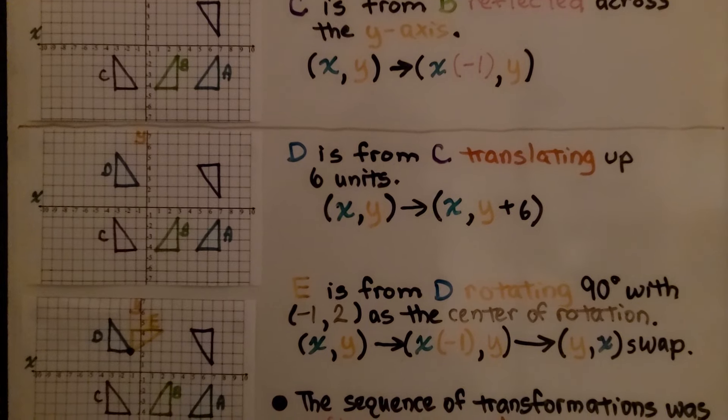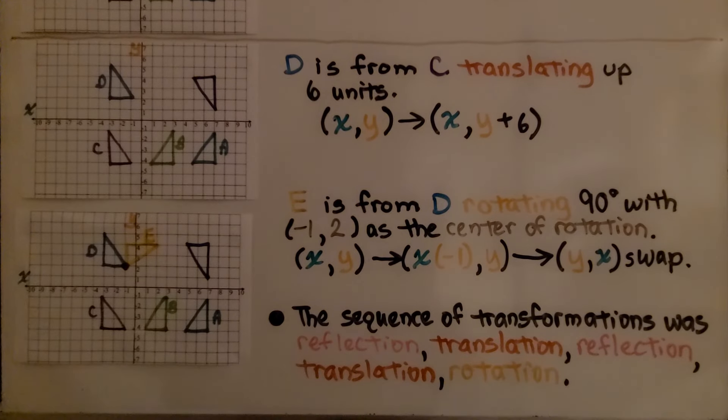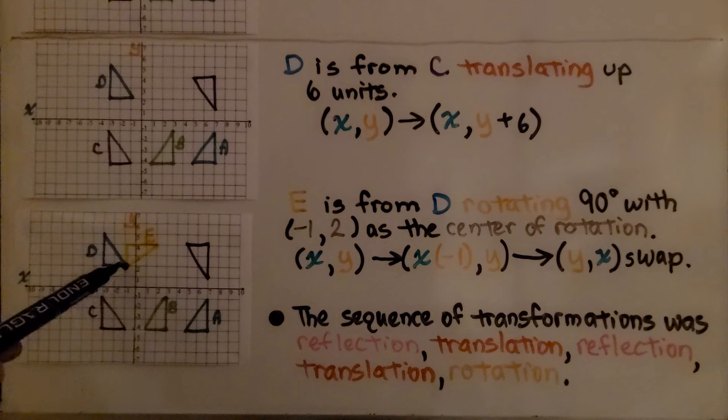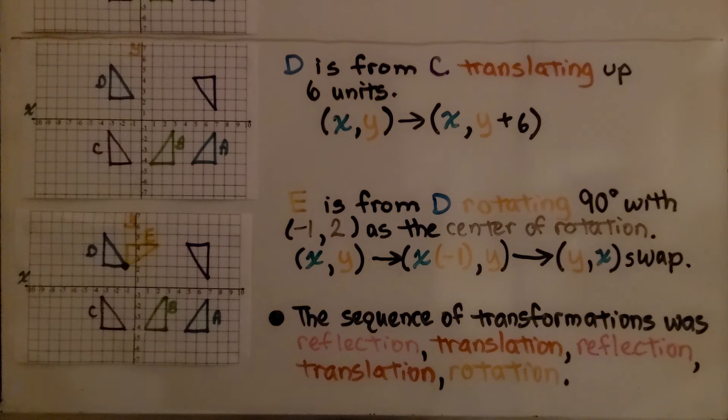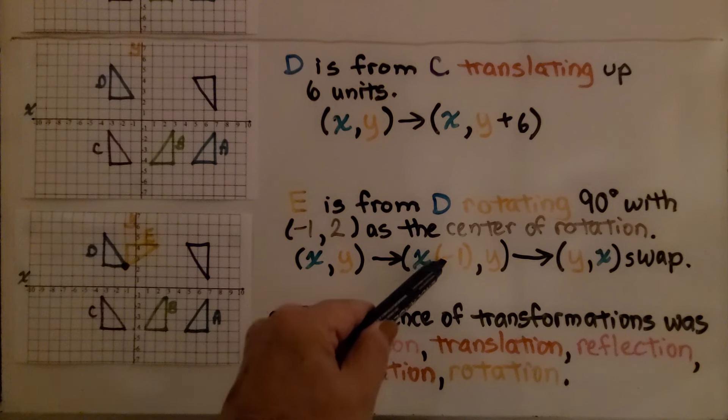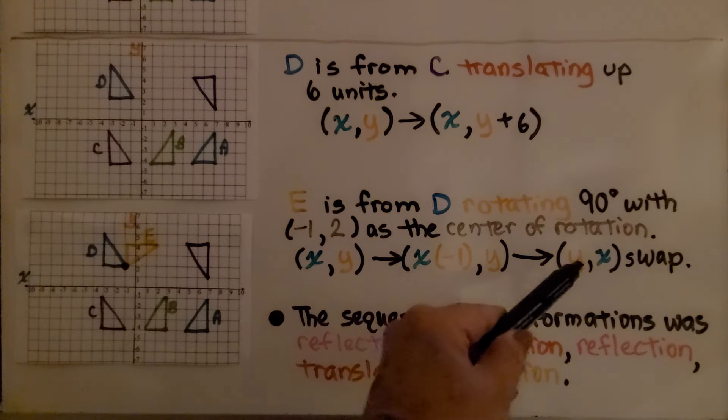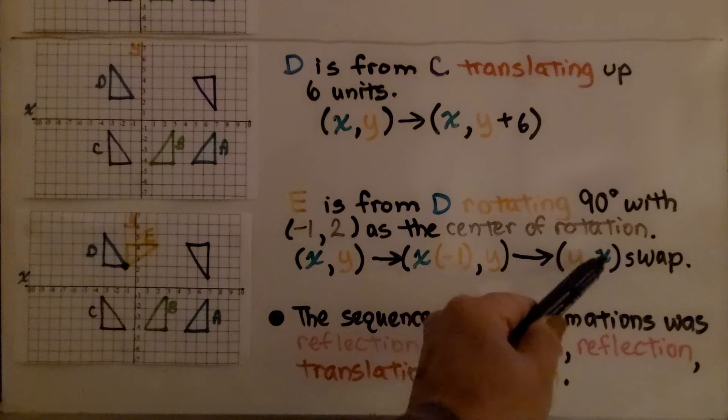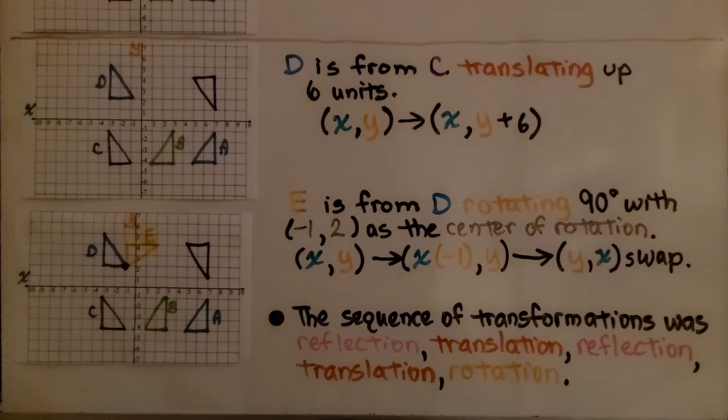So let's move down some more. Remember, E right here is from D rotating 90 degrees with (-1, 2) as the center of rotation. On this vertex right here, it rotated 90 degrees. Since it rotated 90 degrees, our x value is multiplied by negative 1, then we swapped the x and y values. The sequence of transformations was a reflection, then a translation, then another reflection, then a translation, and then a rotation.